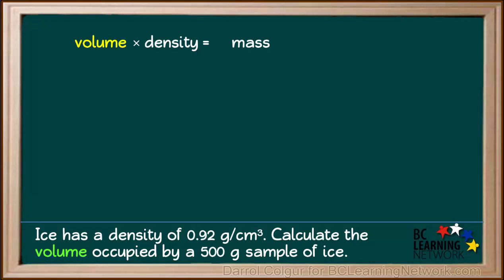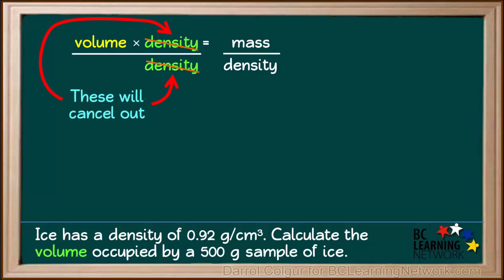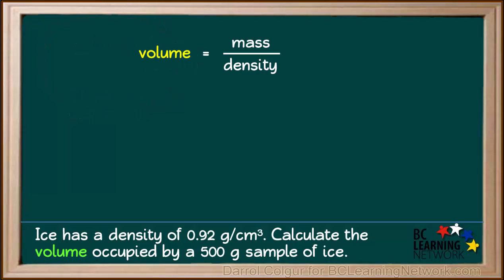In order to get volume by itself on the left side, we divide both sides of the equation by density. Because density is in the numerator and the denominator on the left side, it can be cancelled out, leaving us with only volume on the left side.